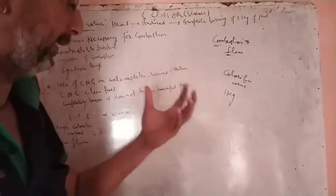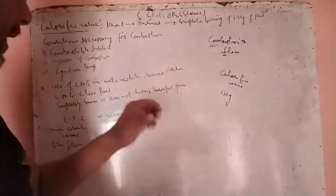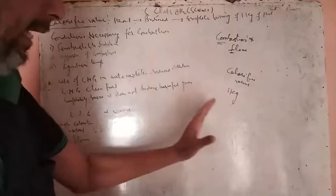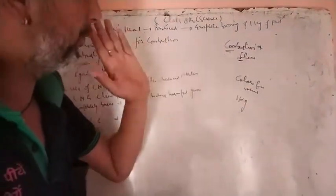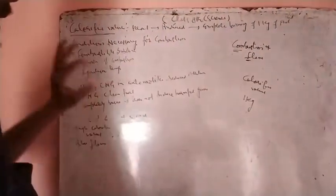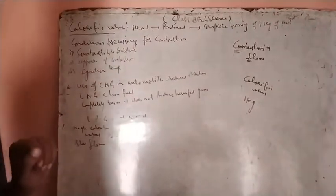With complete combustion, the heat produced from 1 kg of burning or complete burning of fuel - that heat produced is called the calorific value.